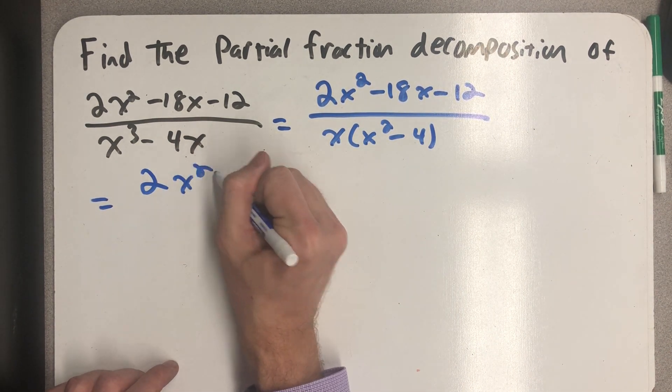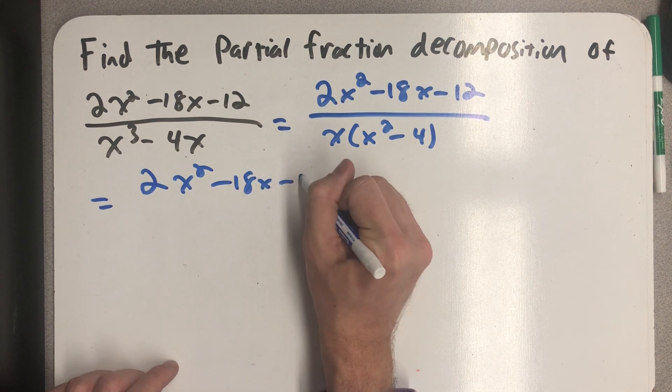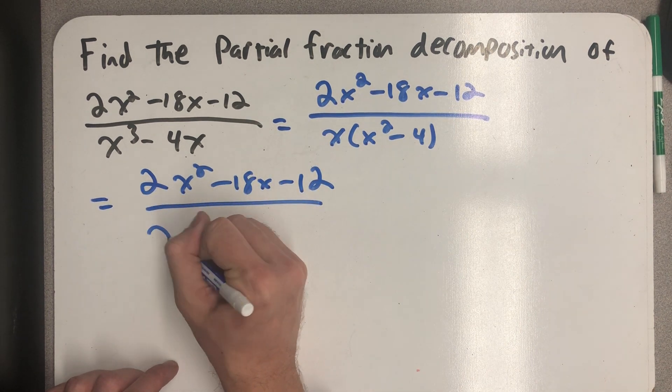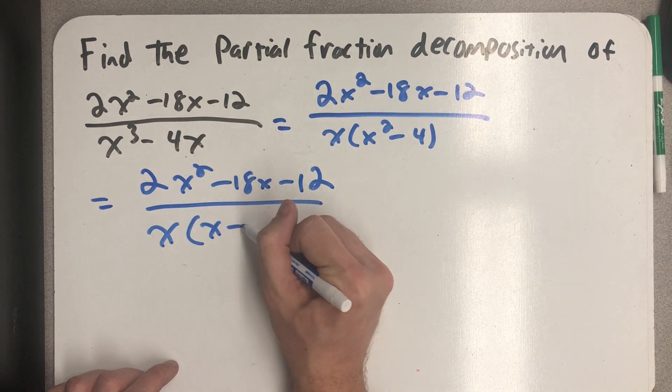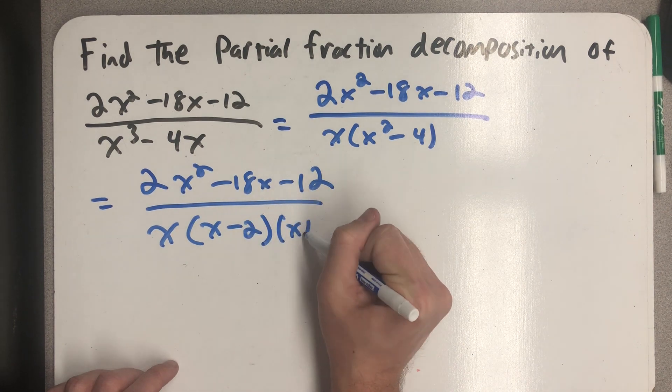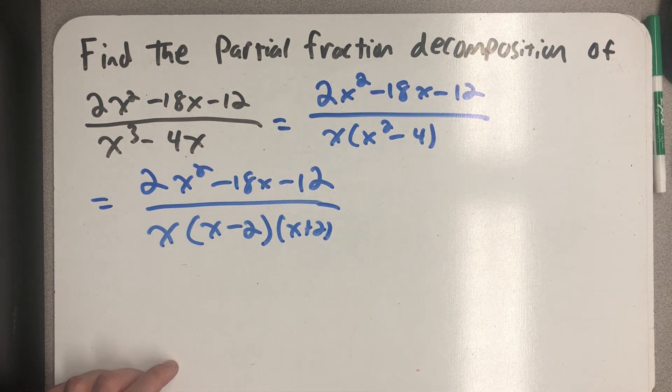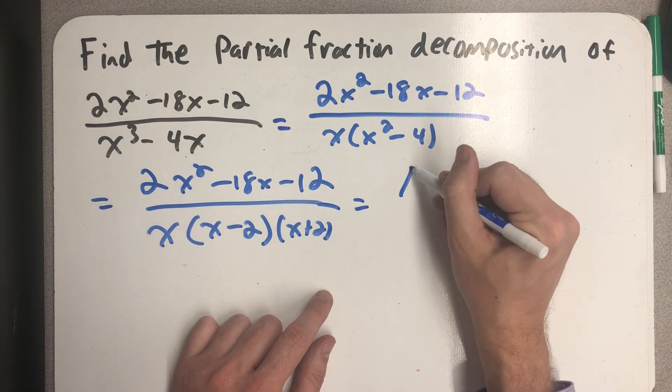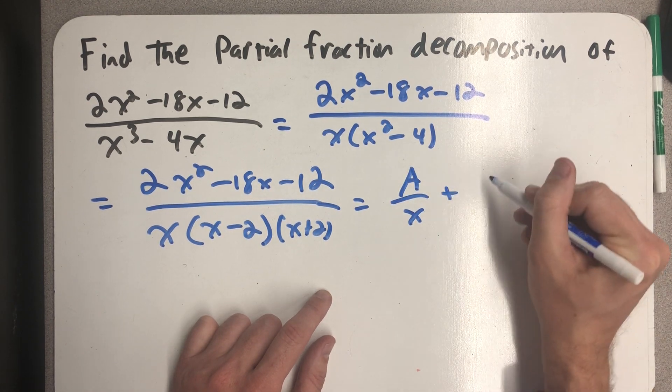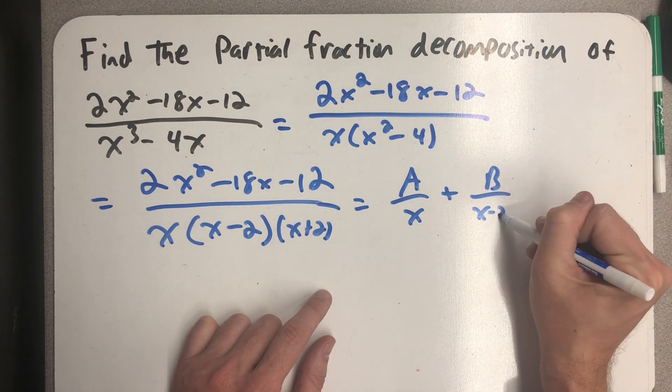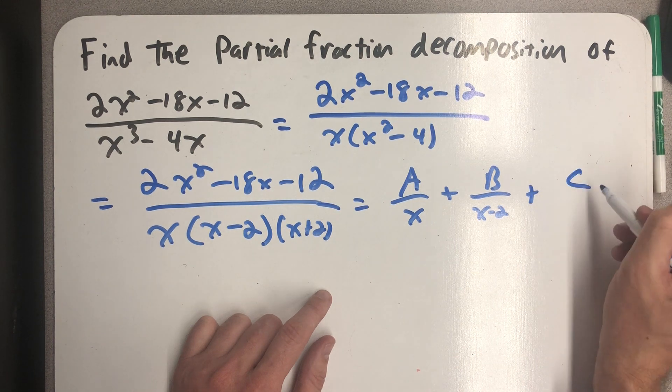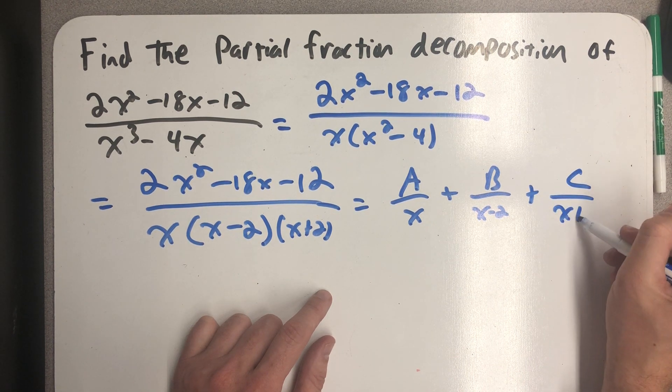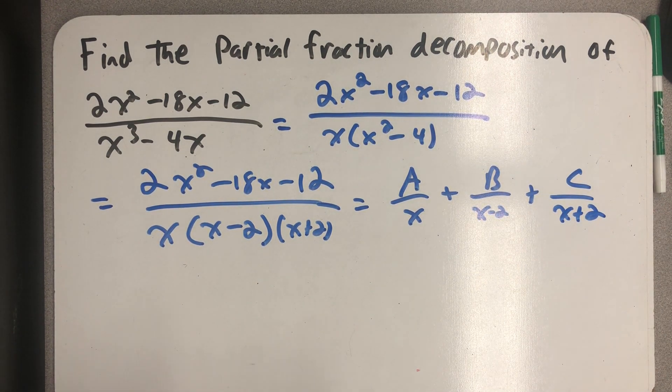So I have three non-repeated linear factors. So I'll need three fractions and now it's our job to figure out what A, B and C are.